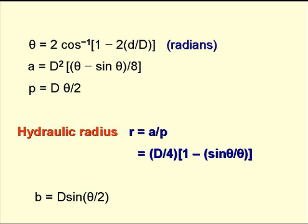So the hydraulic radius, which is a over p, is equal to D/4, where D is the sewer diameter, times (1 - sin θ/θ). And the breadth of flow, b, is the sewer diameter times sin(θ/2).